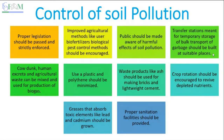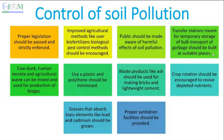Cow dung, human excreta, and agricultural wastes should be used for energy generation. Biogas is easy to generate — it can be made at home from kitchen waste or farm residues even without cow dung. This reduces the volume of waste generated and allows generation of electricity. The biogas slurry can be applied directly to fields as a fertilizer to enrich the soil with nutrients, and the biogas can be used for cooking and lighting purposes.